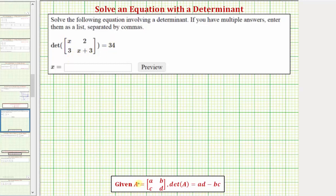Remember, if we have a two-by-two matrix in this form, the determinant of matrix A is equal to AD minus BC. So expressing the determinant using vertical bars, the first row would be x and 2, and the second row would be 3 and the quantity x plus 3, and this must equal 34.